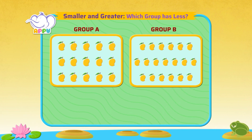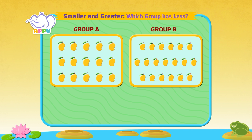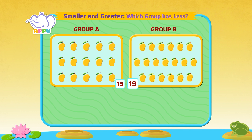Let's look at group A. It has 15 mangoes and group B has 19 mangoes. Let's compare and see which group has the lesser number of items.